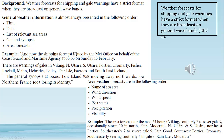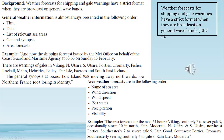Philip Avery, good morning. The shipping forecast issued by the Met Office on behalf of the Maritime and Coast Guard Agency at 0505 on Sunday the 15th of February. There are warnings of gales in Viking, North Utsire, South Utsire, Forties, Cromarty, Fisher, Rockall, Malin, Hebrides, Bailey, Fair Isle, Faroes, and Southeast Iceland. The general synopsis at midnight: low Iceland 958, moving away northwards; low northern France 1005, losing its identity. The area forecast for the next 24 hours: Viking, southerly 7 to severe gale 9, occasionally storm 10 in north, fair, moderate. Cromarty, southeasterly veering southerly 6 to gale 8, rain later, moderate.